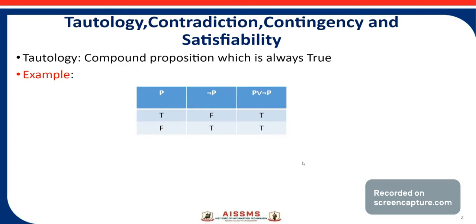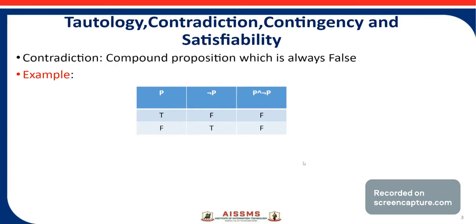Now the next one is contradiction. A compound proposition which is always false is nothing but the contradiction.